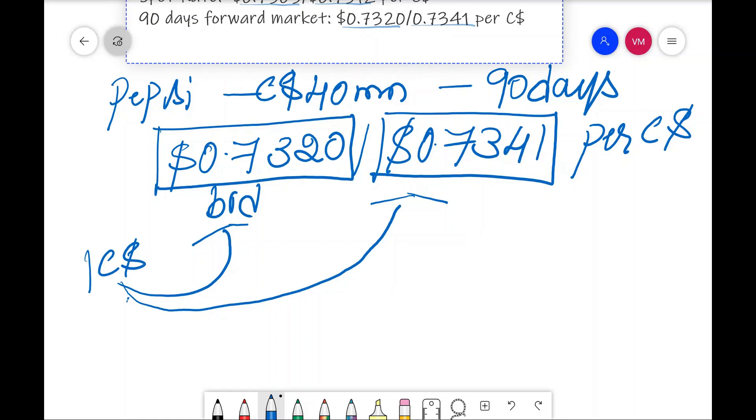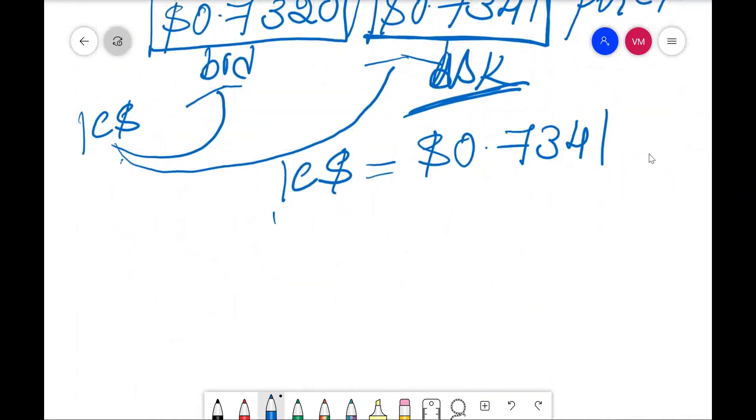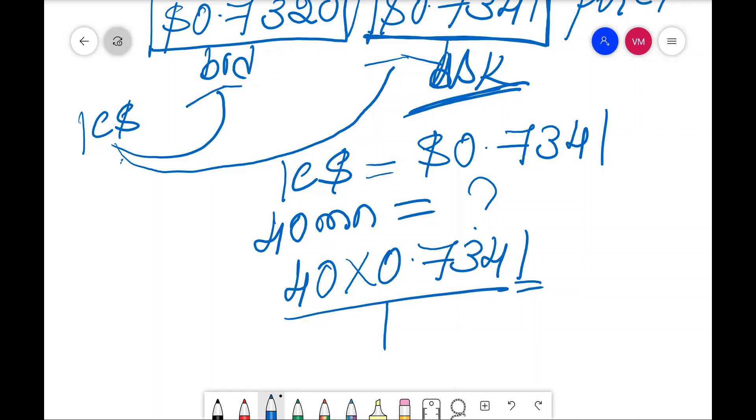Now, whether I need to purchase Canadian dollar or whether I need to sell Canadian dollar, I need to purchase. If I want one Canadian dollar, I need to pay 0.7341 dollar. If I want to purchase 40 million Canadian dollar, how much I need to pay? Cross multiply it, 40 into 0.7341 divided by 1.